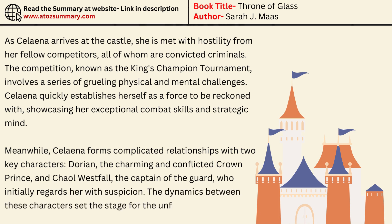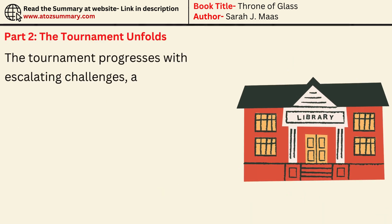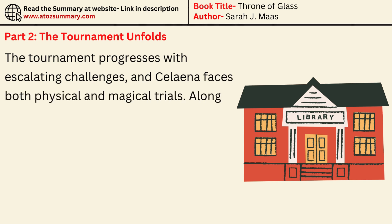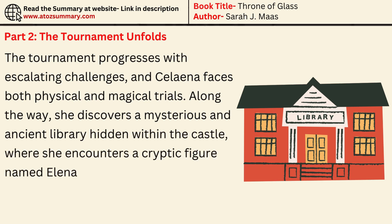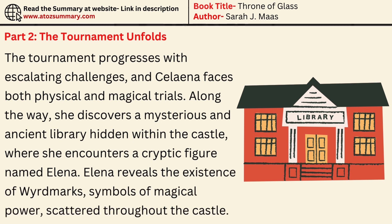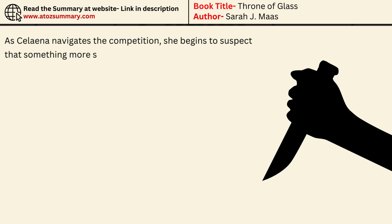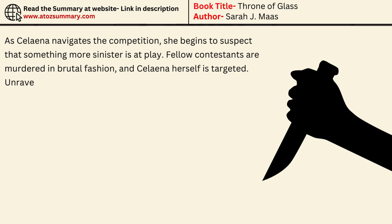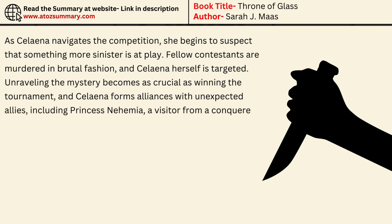The dynamics between these characters set the stage for the unfolding drama. In Part 2, the tournament progresses with escalating challenges, and Selina faces both physical and magical trials. Along the way, she discovers a mysterious and ancient library hidden within the castle, where she encounters a cryptic figure named Elena. Elena reveals the existence of wordmarks — symbols of magical power — scattered throughout the castle. As Selina navigates the competition, she begins to suspect that something more sinister is at play. Fellow contestants are murdered in brutal fashion, and Selina herself is targeted. Selina forms alliances with unexpected allies, including Princess Nehemia, a visitor from a conquered land.